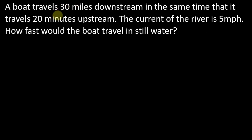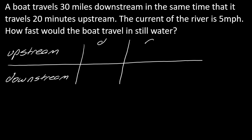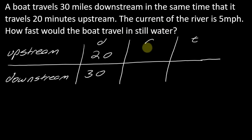There are a few things to unpack here. We want to organize this information in a better way, thinking about going upstream versus downstream and the distance, rate, and time in each situation. So I'll set up a table with D for distance, R for rate, and T for time. We can fill in some of this pretty easily: 30 miles downstream and 20 miles upstream.